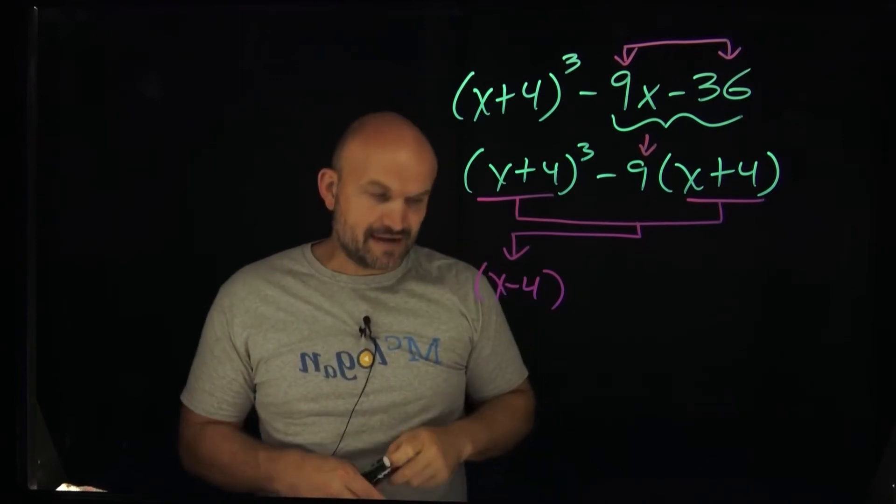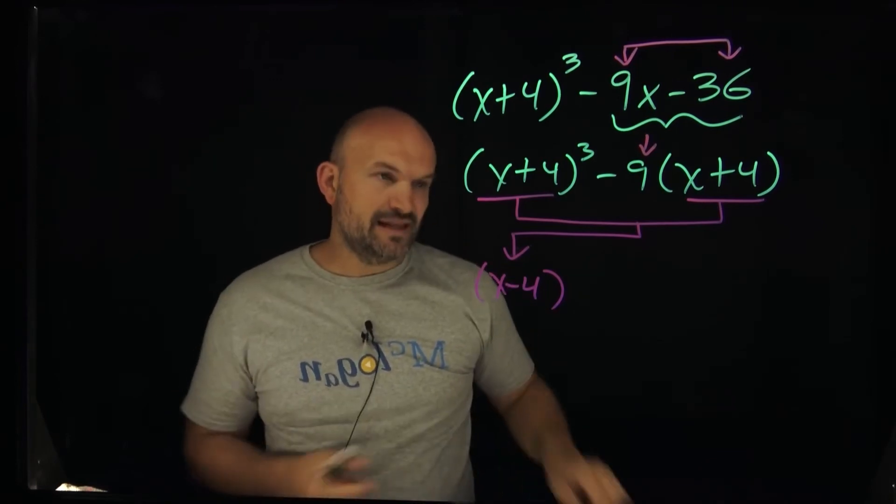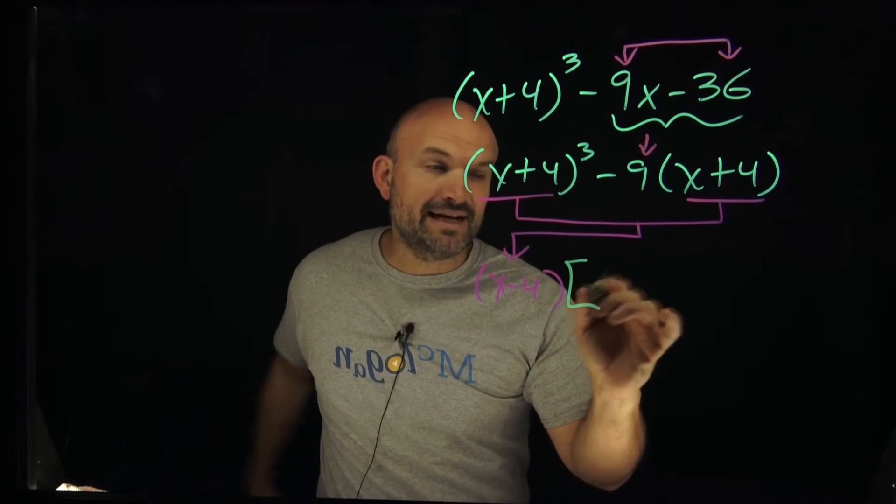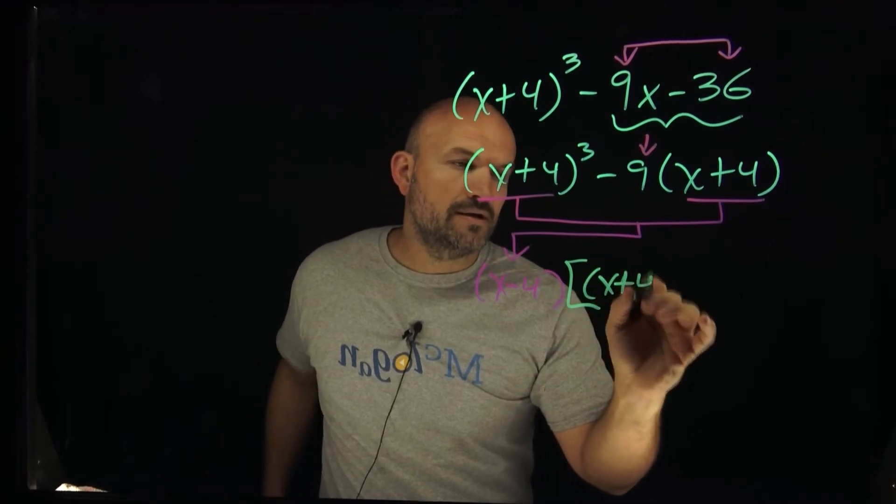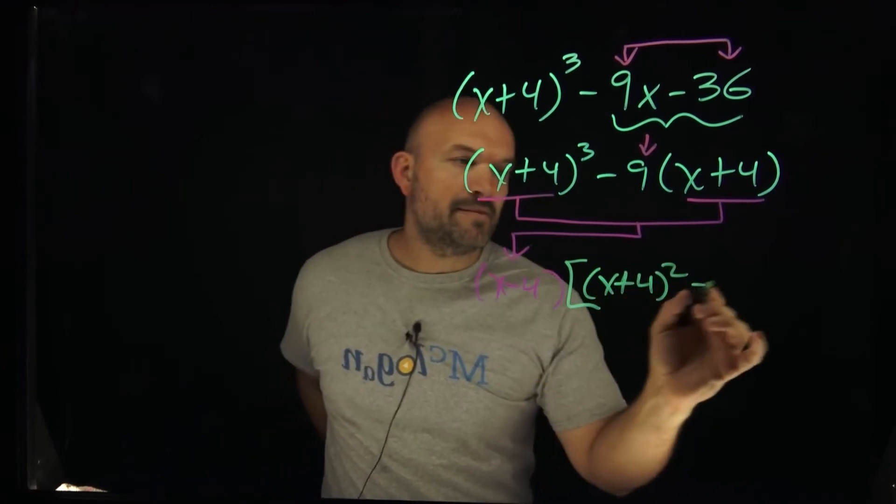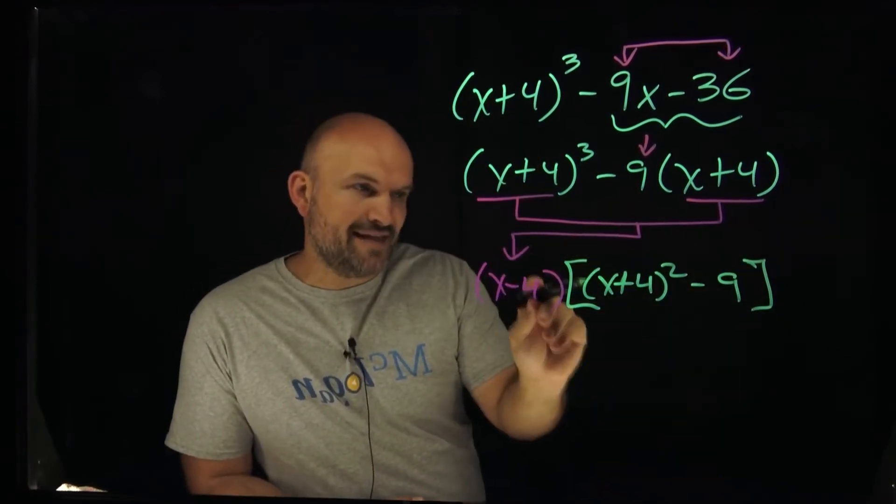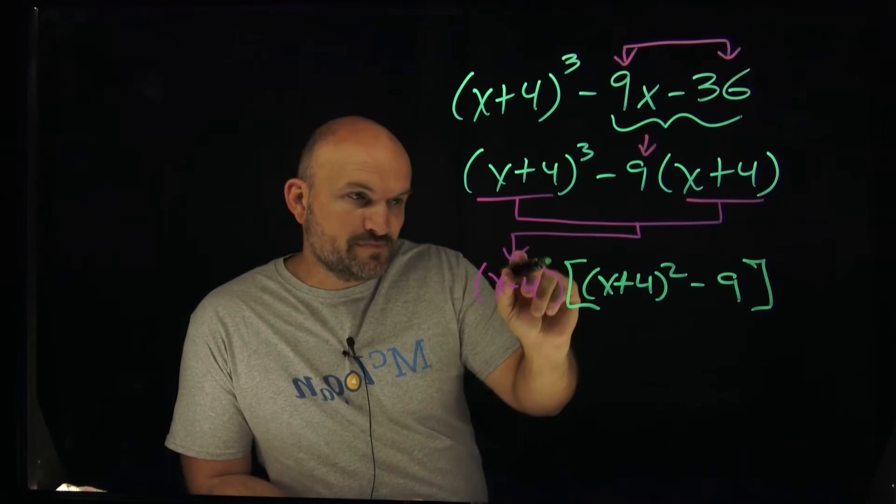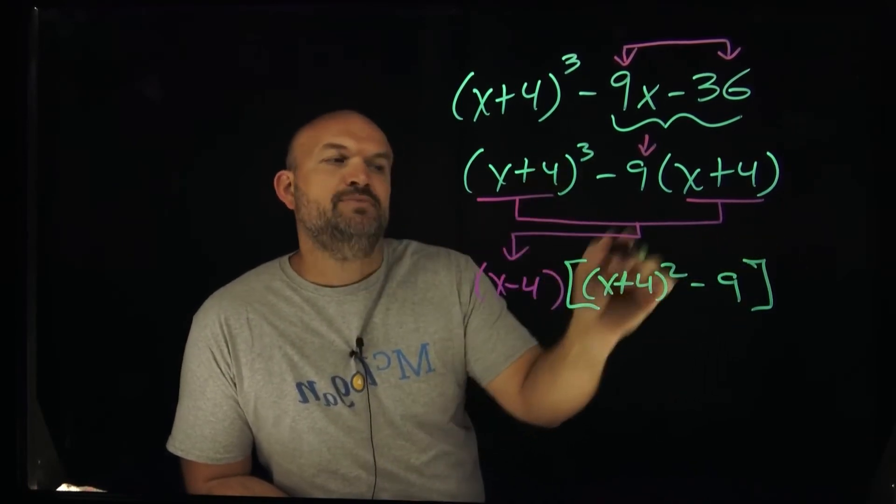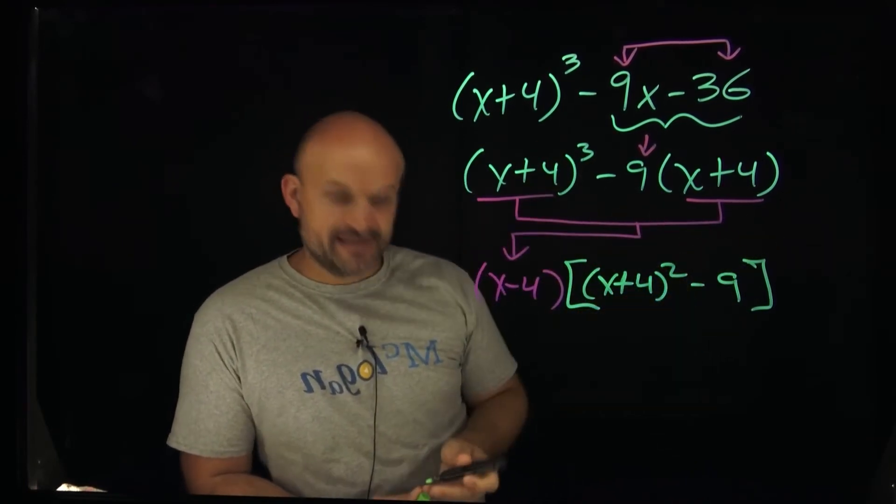Well, what's going to be left over here when I factor this out? In this case, what's going to be left over is a quantity x plus four squared and then minus nine. The reason why I introduced brackets as well as parentheses is because I had this parentheses. This x minus four is multiplied by both of those terms. So this is a quantity x plus four squared and then minus nine.